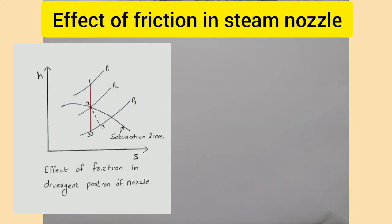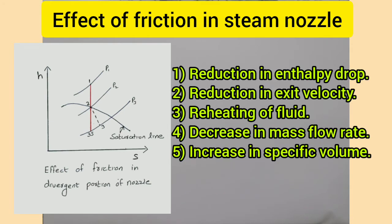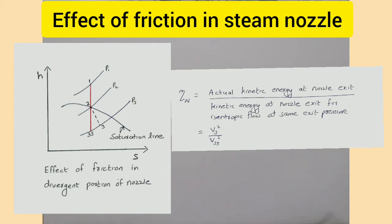The following are the effects of friction in a nozzle: reduction in enthalpy drop, reduction in exit velocity, reheating of fluid, decrease in mass flow rate, and increase in specific volume of steam. We can also express nozzle efficiency as the ratio of actual kinetic energy at the nozzle exit to the kinetic energy at the nozzle exit for isentropic flow at the same exit pressure. Therefore, nozzle efficiency equals v3² / v3s².